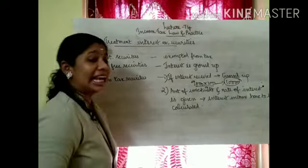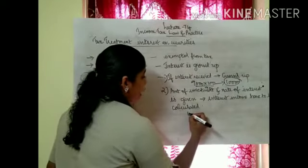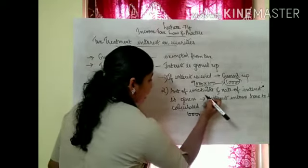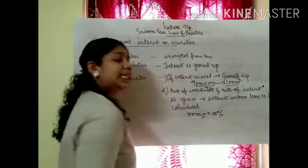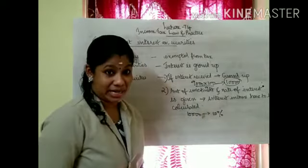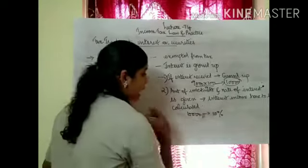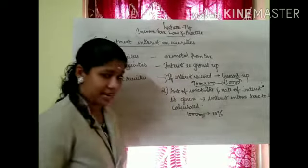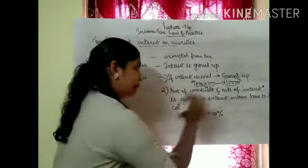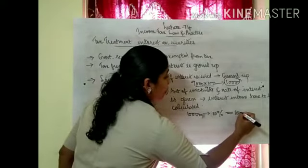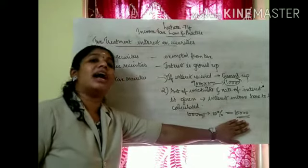In this case, if amount of investment and rate of interest are given, for example 10% interest rate, then we can calculate the interest amount. If investment is 10,000 rupees at 10% interest, you will get 1,000 rupees.